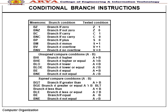Conditional branch instructions: Branch if Zero (BZ), Branch if Not Zero (BNZ), Branch if Carry (BC), Branch if No Carry (BNC), Branch if Plus (BP), Branch if Minus (BM), Branch if Overflow (BV), Branch if No Overflow (BNV). Unsigned compare conditions: BHI (higher), BHE (higher or equal), BLO (lower), BLOE (lower or equal), BE (equal), BNE (not equal). Signed compare conditions: BGT (greater than), BGE (greater than or equal), BLT (less than), BLE (less than or equal), BE (equal), BNE (not equal).